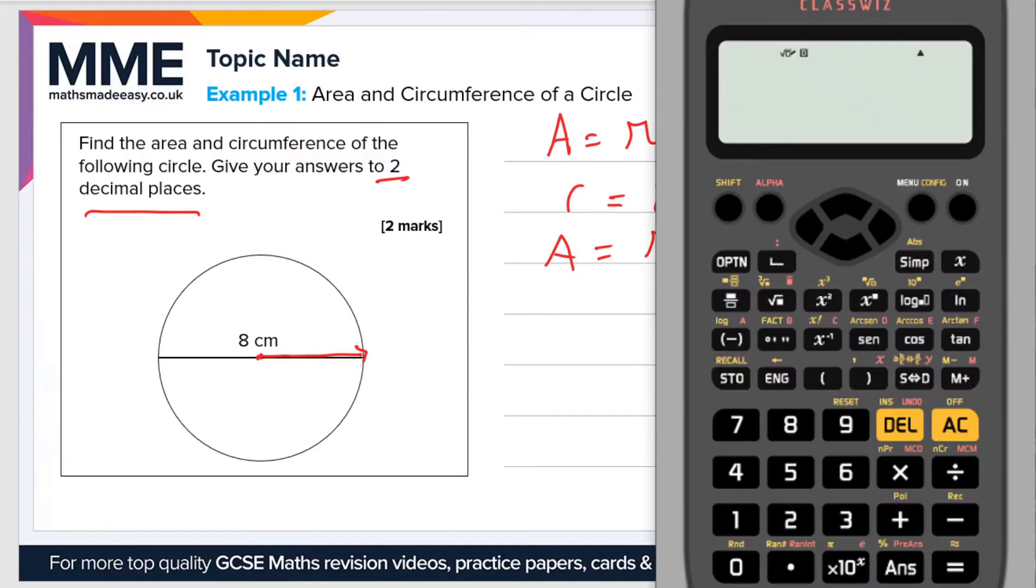So the area is 16 pi. So 16 times pi, on this calculator you press shift and this button down here. So 16 times pi and then you press this SD button and that gives us 50.27 to two decimal places. So area equals 50.27 centimeters squared.